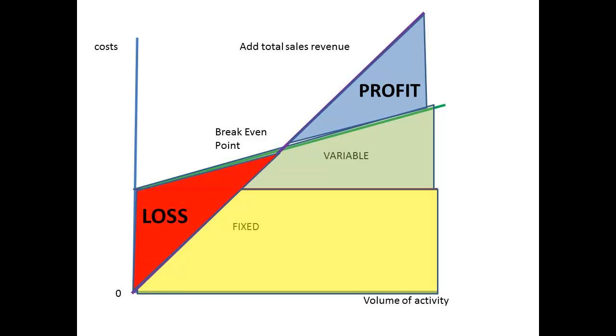To make this clear, we have shaded two triangles. The red triangle represents the amount by which total costs will exceed total sales revenue for a range of volume of activity. Clearly, in this region, there is a loss. The blue triangle represents an area where the total sales revenue will exceed the total costs. This represents the area where profit is made.